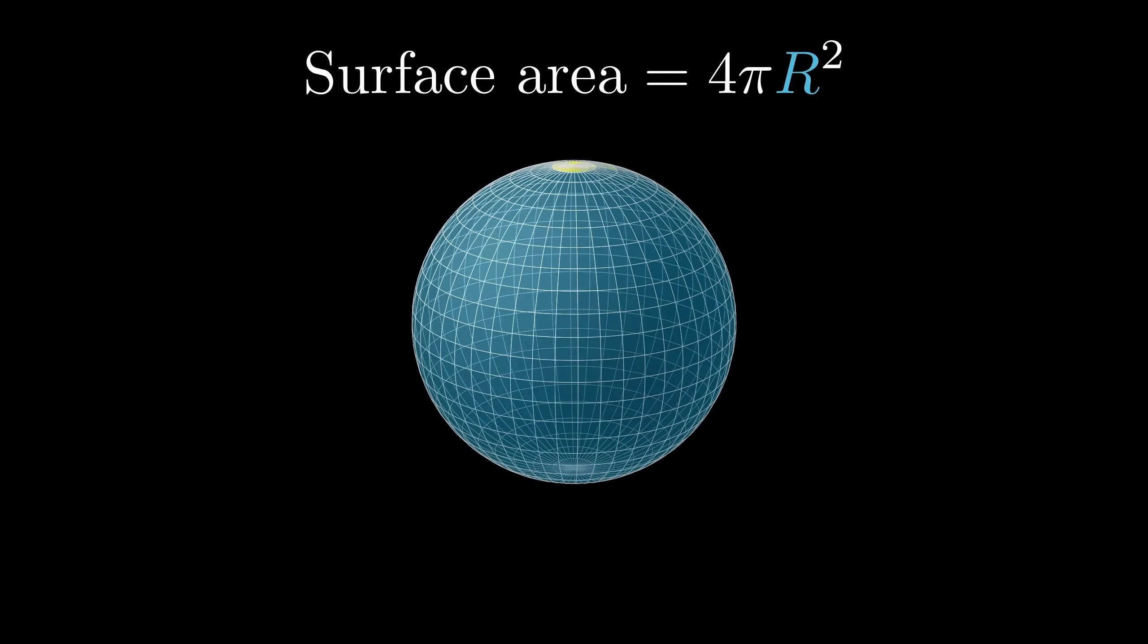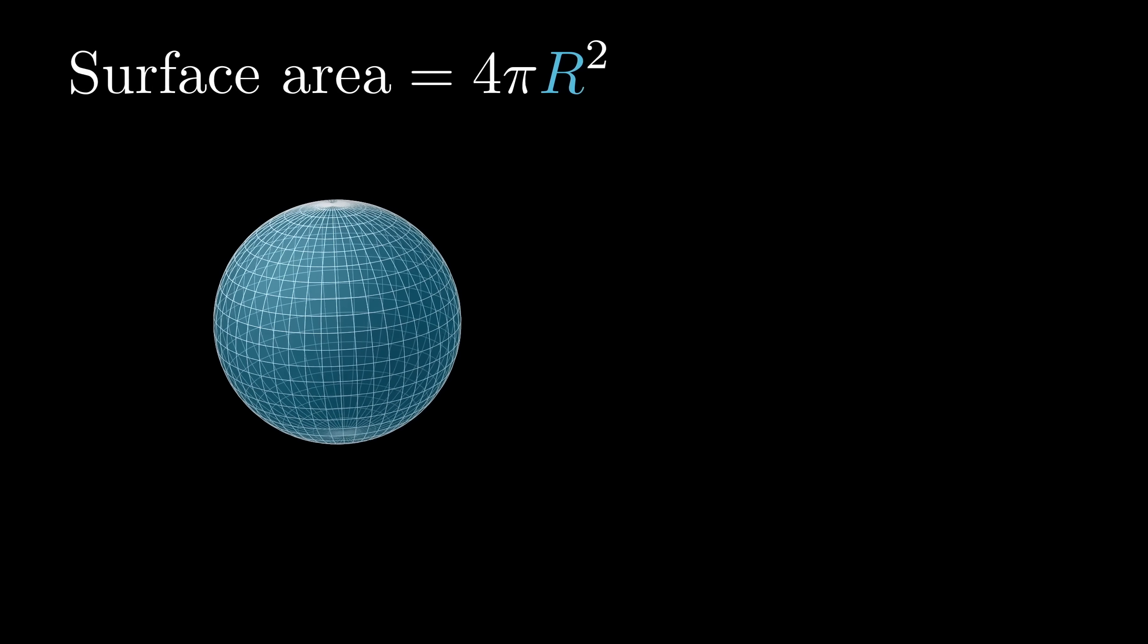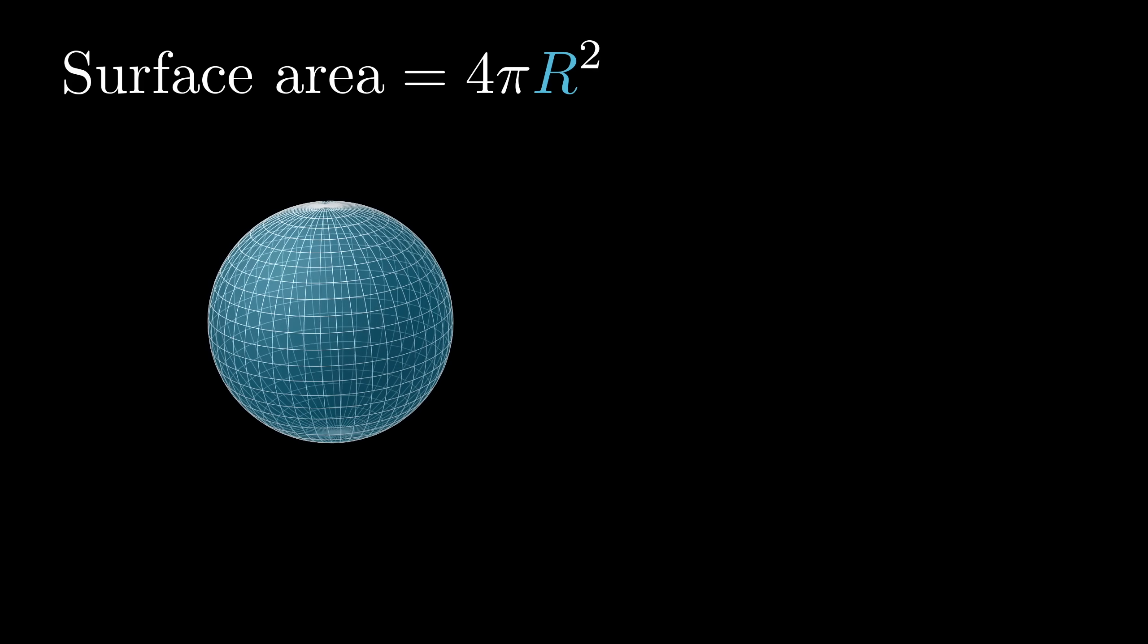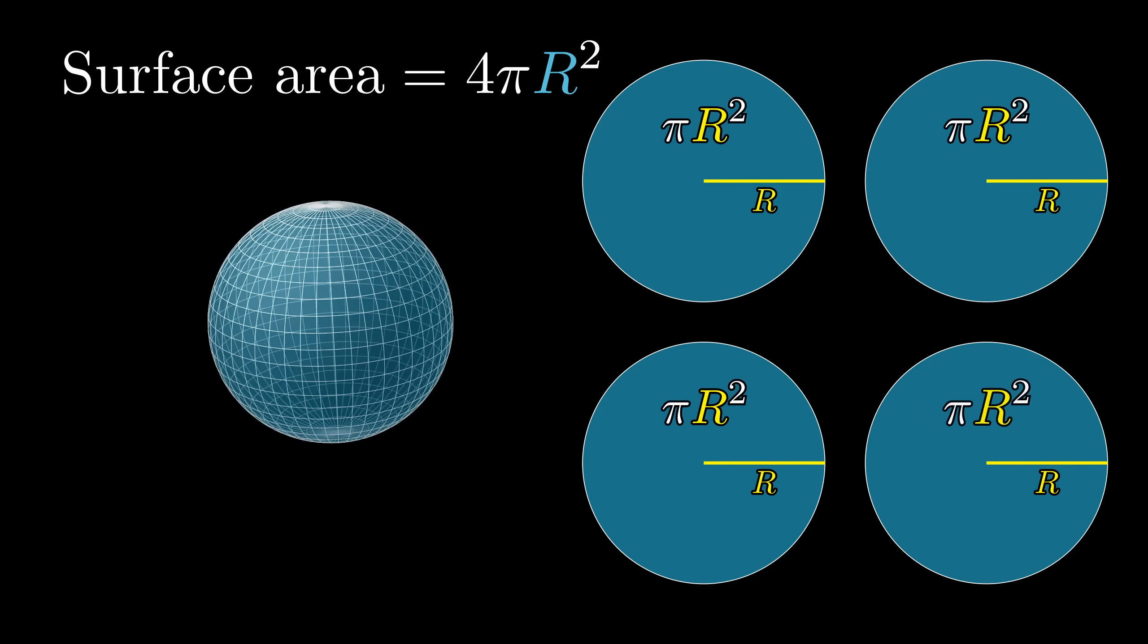Some of you may have seen in school that the surface area of a sphere is 4πr², a suspiciously suggestive formula given that it's a clean multiple of the more popular πr², the area of a circle with the same radius.